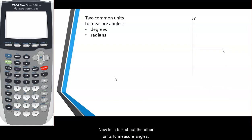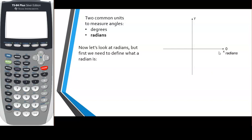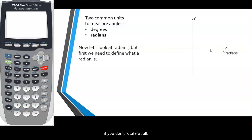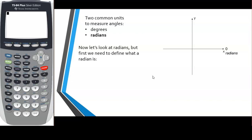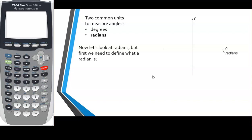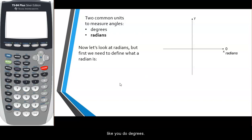Now let's talk about the other unit to measure angles: radians. Our initial side is the positive x-axis, and if we don't rotate at all, this is where zero radians would be located. Let's first define what a radian is, because you may not have heard or understood exactly what a radian is, like you do degrees.